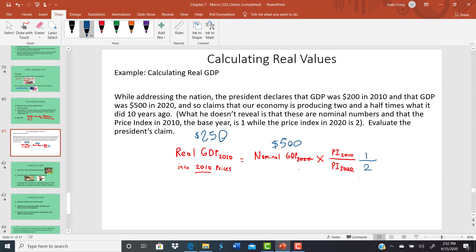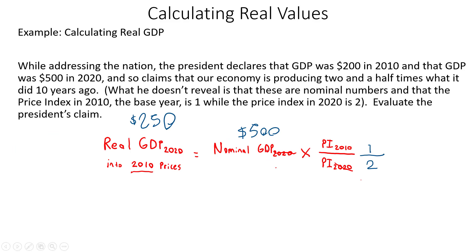It's important to understand how to calculate real values so you can analyze statements made by national leaders. Make sure you know how to do this for a quiz or exam — you may need to calculate a price index and then use it to calculate a real value. If a year is the base year and no price index is given, remember it's always equal to 1. A price index of 2 in 2020 using 2010 as base year means $1 in 2010 equals $2 in 2020.